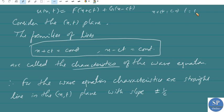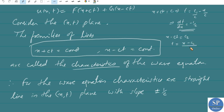From x+ct = c₁ we get t = (c₁-x)/c, so dt/dx = -1/c. From x-ct = c₂ we get t = (x-c₂)/c, so dt/dx = 1/c. Therefore the slopes are given by 1/c or -1/c: this characteristic has slope -1/c and this one has slope 1/c.